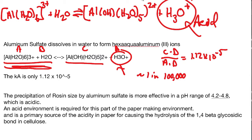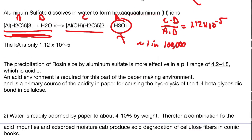The precipitation of rosin size by aluminum sulfate is more effective in a pH range of 4.2 to 4.8. Even though the alum isn't contributing that much acid itself, people manufacturing paper often did it in a lower pH to make this process work, so there's naturally acid all around it too. This acid environment is required for this part of paper making, and it's a primary source of acidity that causes hydrolysis of the 1,4-beta glycosidic bond in cellulose, as we discussed last time.